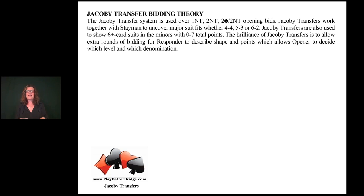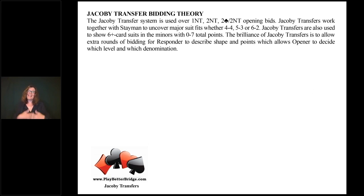His original intent for Jacobi transfer was to play all the hands. He would play with students, and anytime he opened one no trump he wanted to play the hand. But if his students bid a suit and that suit became trump, they would be declarer — and he wanted to be declarer because he had a big ego along with his talents. So he said, 'Partner, anytime I open one no trump, I want you to bid the suit underneath the suit you have.'